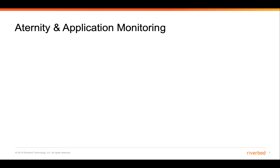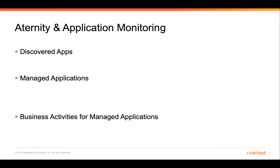For Eternity, there are three different levels of application monitoring that we can perform: discovered apps, managed apps, and then business activities for managed applications.